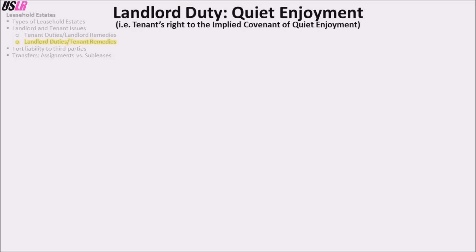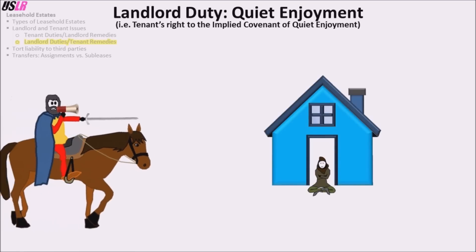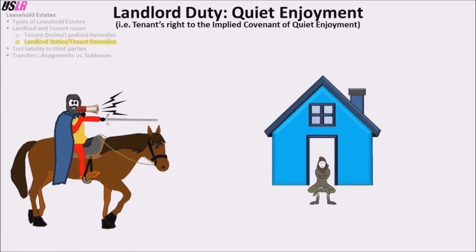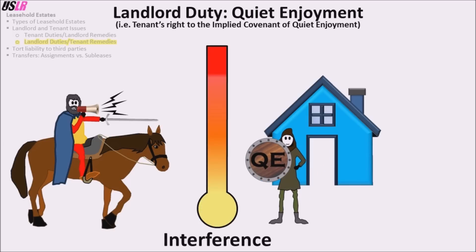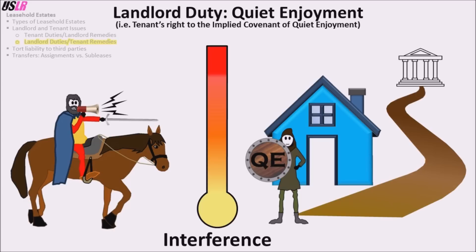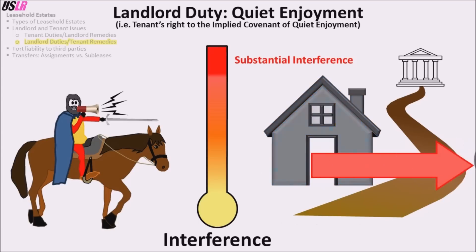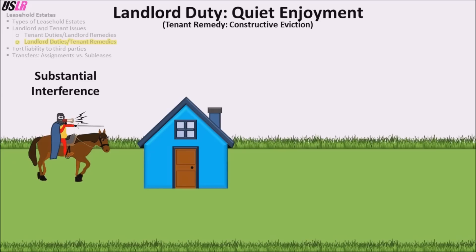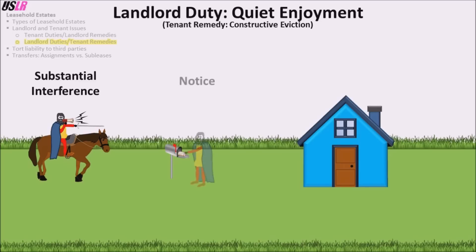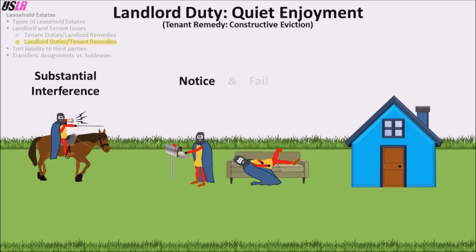The implied covenant of quiet enjoyment is the tenant's right to use and enjoy the property as intended without interference. The remedies available depend on the degree of interference. The tenant can always at least sue for damages, but if the interference rises to the level of substantial interference, the tenant may also leave the property without paying any more rent. This remedy is based on the legal theory of constructive eviction. Constructive eviction requires substantial interference by the landlord's actions or inactions. Substantial interference does not have to be permanent and can be a reoccurring problem. Notice must be given to the landlord and the landlord must fail to correct the problem.